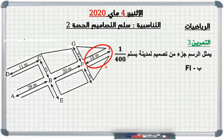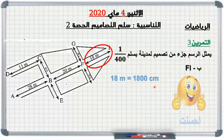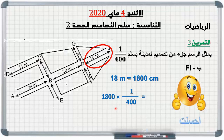المسافة FE في الحقيقة هي ثمانية عشر متر. نحولها إلى ألف وثمانمائة سنتيمتر. بنفس الطريقة نضربها في السلم ونختزل بالأصفار فتبقى لدينا ثمانية عشر مقسومة على أربعة تساوي أربعة فاصلة خمسة سنتيمتر. إذن المسافة FE هي أربعة فاصلة خمسة سنتيمتر.